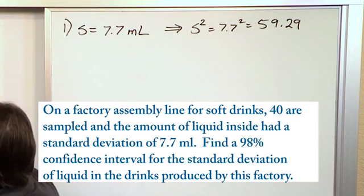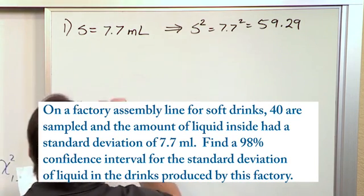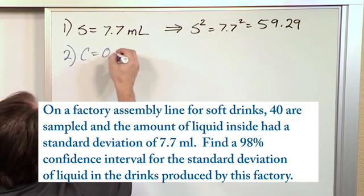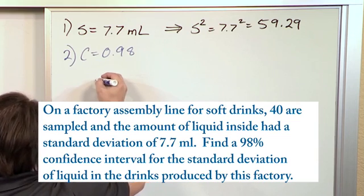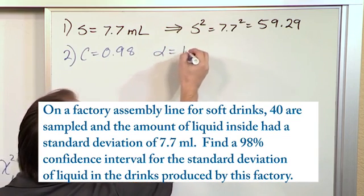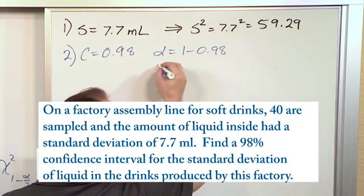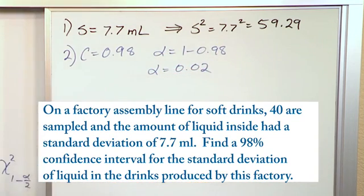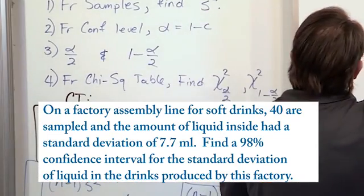Now the next thing says, from the confidence level, find alpha. So what we have here is the confidence level is 98%, so 0.98. And so what that means is alpha is 1 minus 0.98, so alpha is 0.02. So that is what we call the level of significance, 0.02.